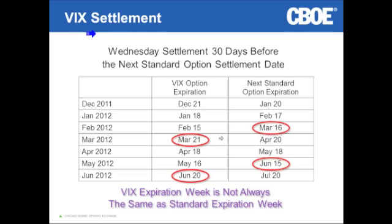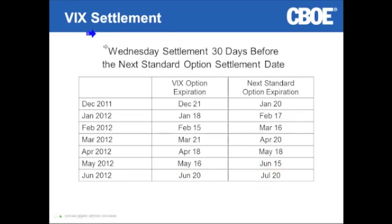More often than not, VIX expiration is the Wednesday of that standard expiration week. The key point is you want to know which is which. Many option expiration calendars now include the VIX expiration date. If you're going to be trading something close to expiration, you just want to be aware of when VIX expiration is — it's just not as intuitive as the standard third-Friday-of-the-month options.